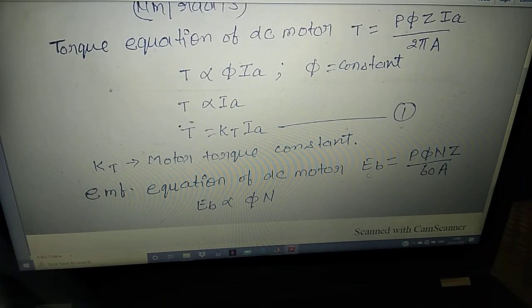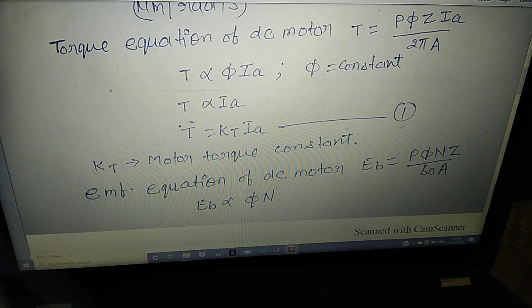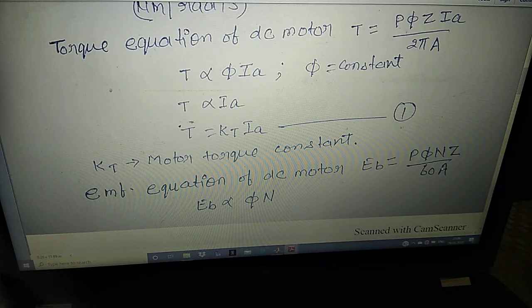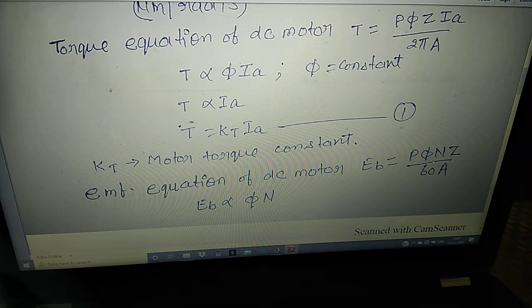Now come to the EMF equation of DC motor. EB = P·phi·N·Z / (60·A), where P is number of poles, phi is flux per pole, N is speed in RPM, Z is total armature conductors, and A is number of parallel paths. For an already-designed machine, back EMF EB is directly proportional to flux times armature speed. Since we are discussing armature control with constant flux, EB is proportional to N (speed in RPM).